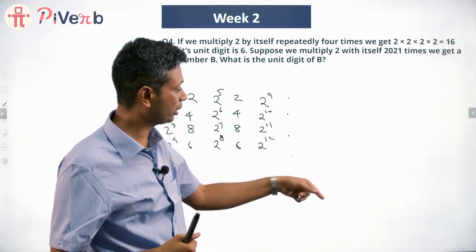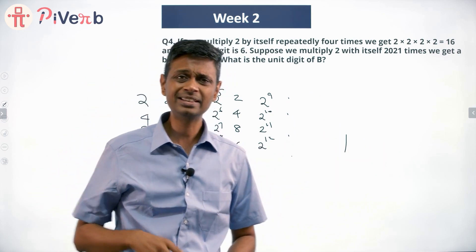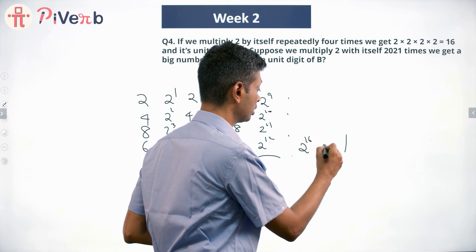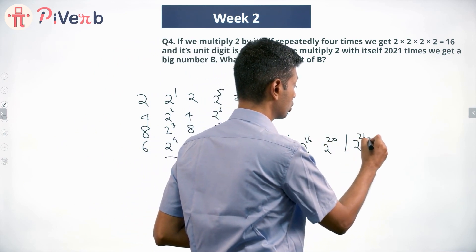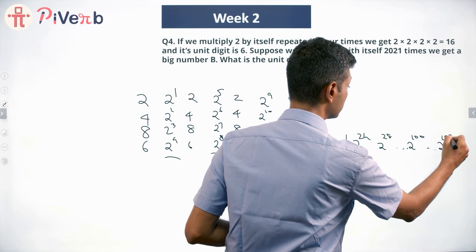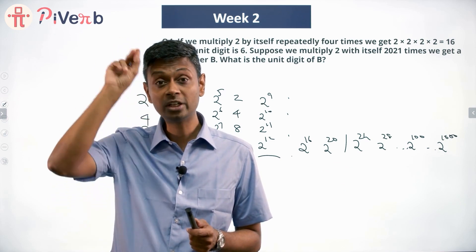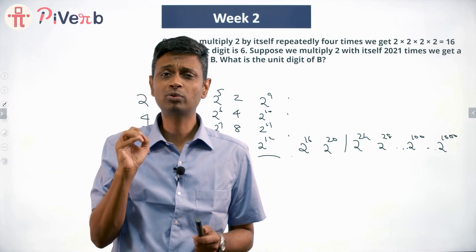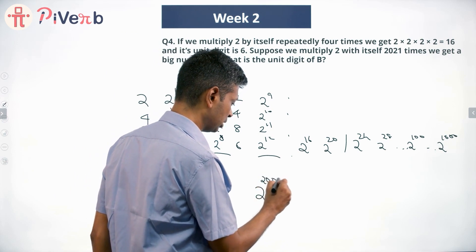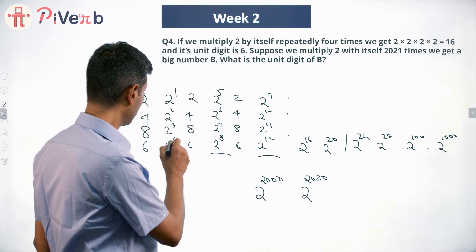Now, where does 2^2021 sit? The pattern goes in steps of 4, so we track multiples of 4: 2^4, 2^8, 2^12, 2^16, 2^20, 2^24 ... 2^100, 2^1000 — all end in 6, because any multiple of 4 as the exponent gives units digit 6. We want 2^2021, and the closest multiple of 4 is 2020. So 2^2020 is a multiple of 4 and will end in 6.